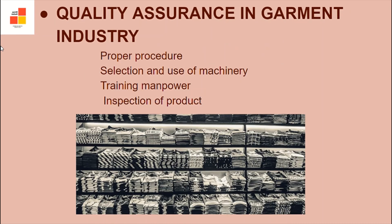Quality assurance in garment industry means fitness for use. It is ensured by adapting proper procedures of work from manufacturing to finished goods, selection and use of machinery, and training manpower — for example, operators, supervisors, and management — in the using of machinery.